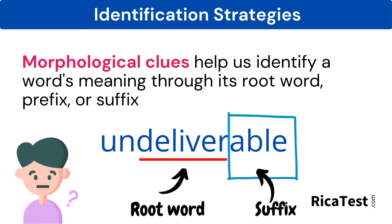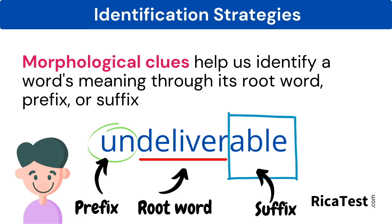But the student isn't finished yet. The student sees that there is a prefix still to be considered, and knows that un means not, such as unknown or unhappy. So the student uses the identification strategy of morphological clues to uncover the meaning of the word, understanding it to mean that the object cannot be delivered — it is undeliverable.